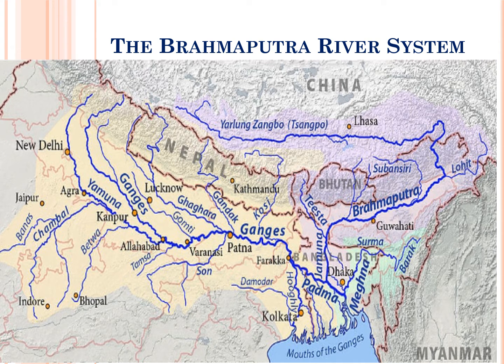Let us discuss about the third perennial river, which is the Brahmaputra river system in this video. I have already discussed the other two — the Indus river system and the Ganga river system — in my previous videos.